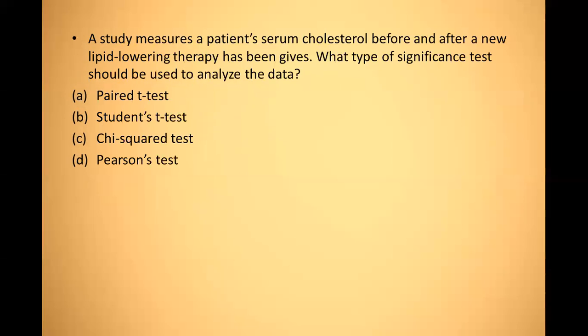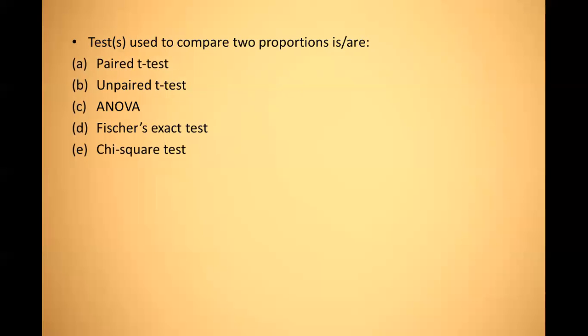Next: a study measures serum cholesterol before and after a new lipid-lowering therapy — what significance test should be used? Paired t-test is used here. Next: which test compares two proportions? Two proportions are given — chi-square test is done; Fisher exact test is also done when the sample is less than 30. So the answer is both D and E.